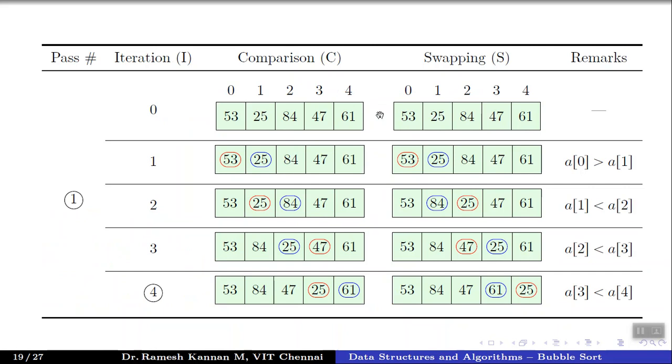This is the first pass. In the first pass we'll be doing n minus 1 comparisons, which means five entries, so four iterations. The first entry 53 and 25 get marked. We'll check if this is greater than this. We don't do any swapping because this is descending order. For descending order the first one should be higher than the next one. Here it is higher, so we don't do any swapping.